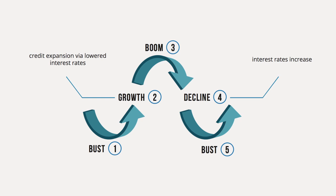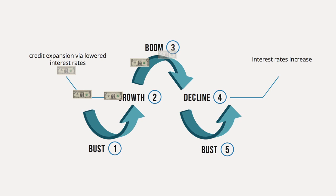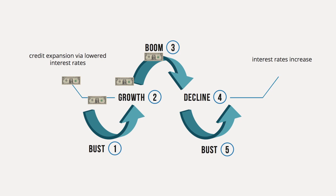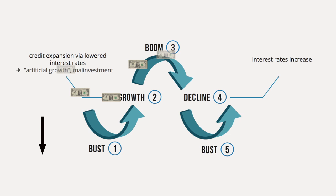Austrian economists argue that business cycles are a direct cause of excessive credit flow into the market. This is facilitated by an intentionally low interest rate set by the government. This situation gives the false impression that money originally saved for investment has increased, and the pool of investable funds is bigger. This creates an illusion and leads to misallocation of investments, or malinvestments.